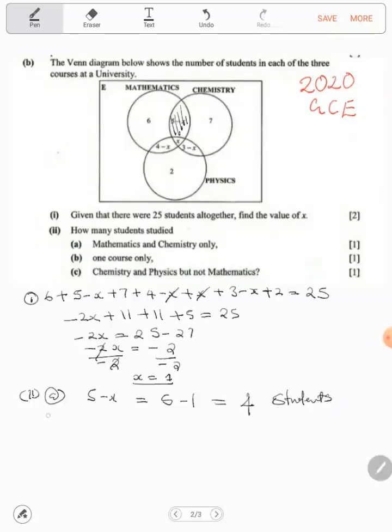Part 3: one course only. One course only can be chemistry, mathematics, or physics. That will be 6 plus 7 plus 2, which is 9, giving you 15 students.